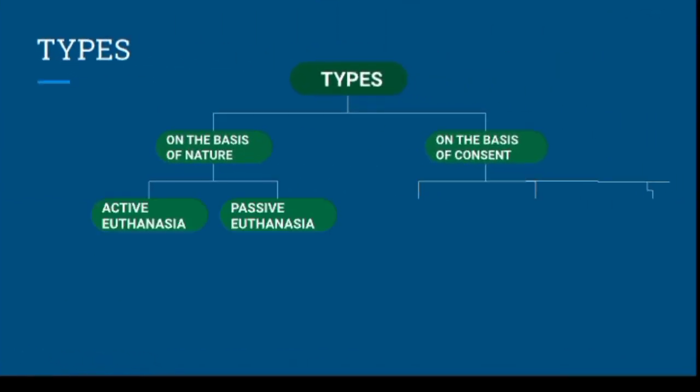There are different types of administering euthanasia. Starting with active euthanasia, it refers to the physician's deliberate act, usually the administration of lethal drugs, to end an incurably or terminally ill patient's life. Passive euthanasia refers to withholding or withdrawing treatment which is necessary for maintaining life.